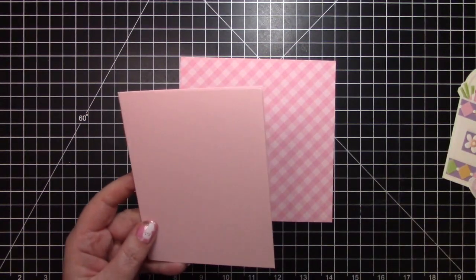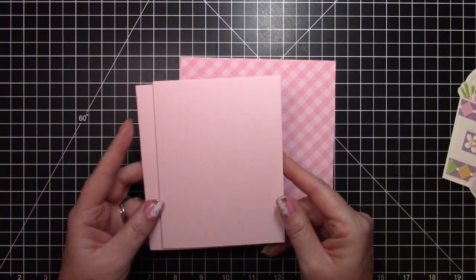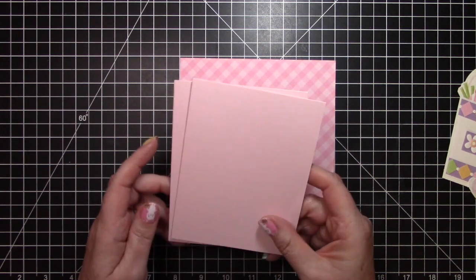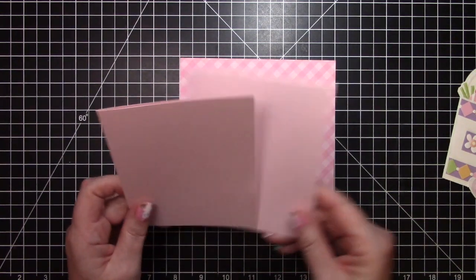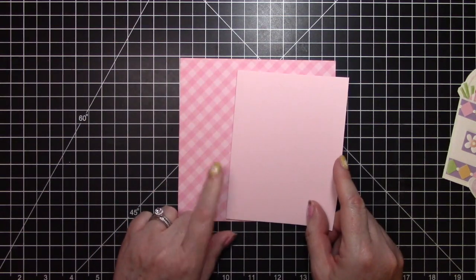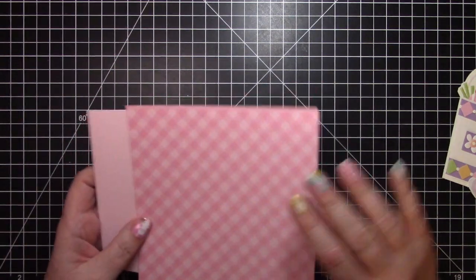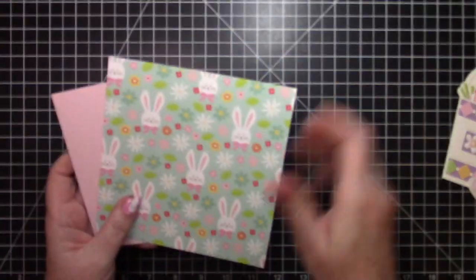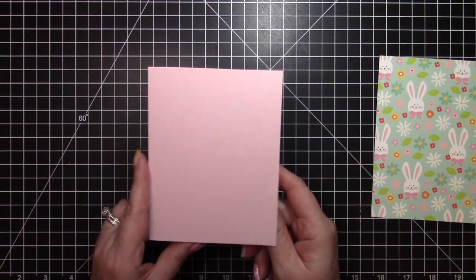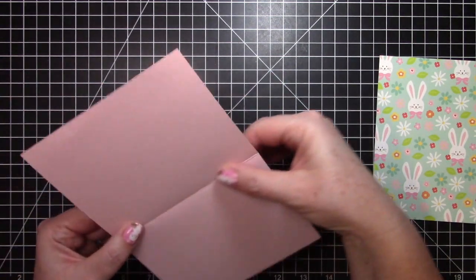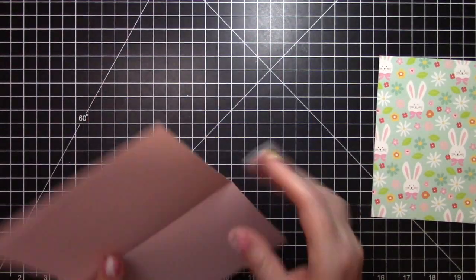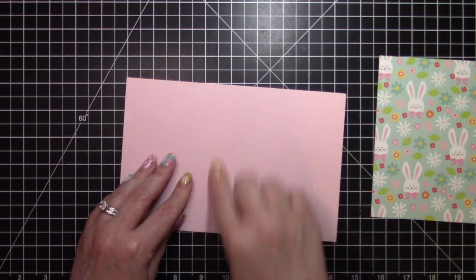I have a card base. What I took was an eight and a half by eleven sheet of paper, I folded it in half the long way at four and a quarter and then I cut it in half at five and a half. I'm going to use one of those card bases to go with this paper. I have my standard A2 size card base and I'm just going to open it and I'm going to cut one inch away from this fold on one side, so it's going to leave me a one inch flap on the front.